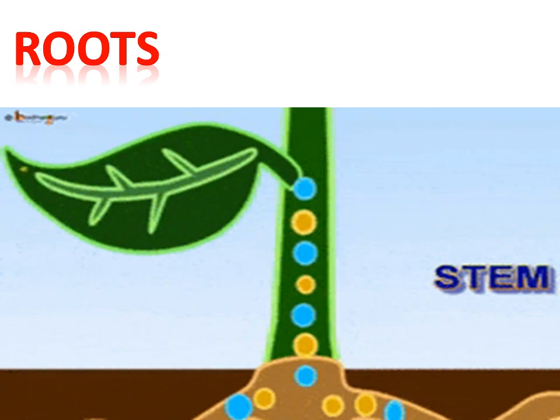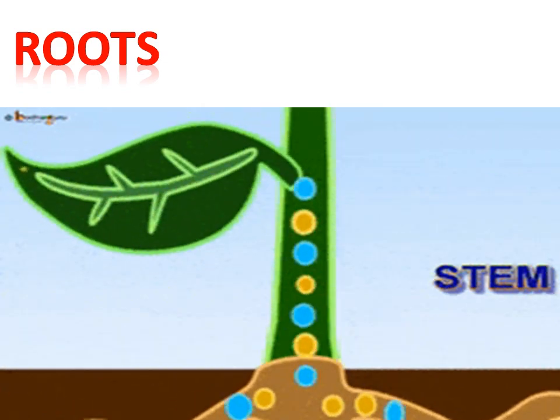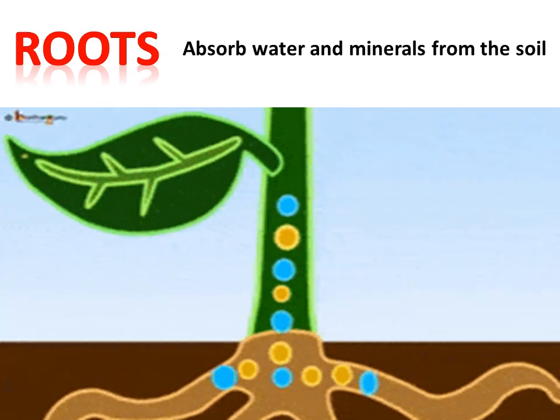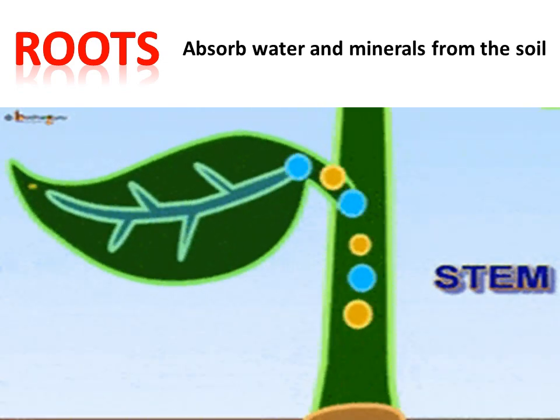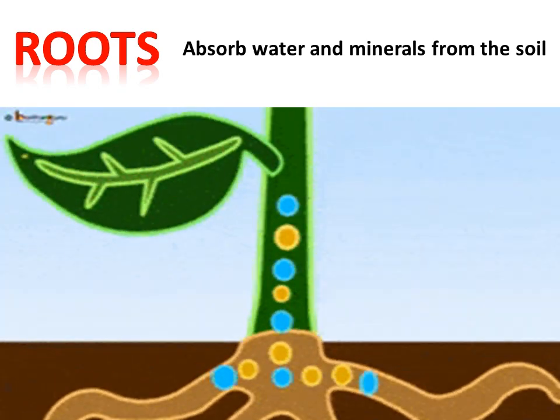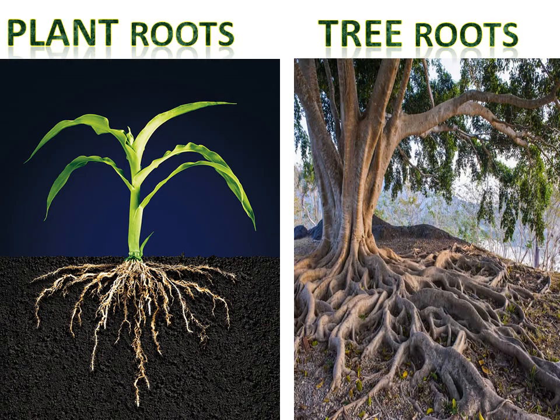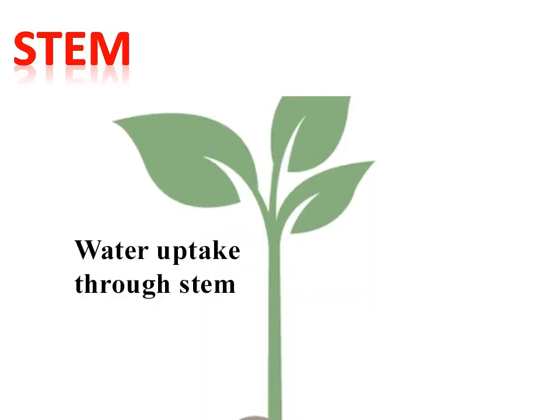The first part is roots. Do you know the function of roots? Roots hold the plant in the soil, and they act like straws — they absorb water and minerals from the soil. Plant roots and tree roots both look different. Tree roots are thicker because trees are bigger in size, while plant roots are thin.